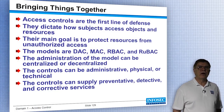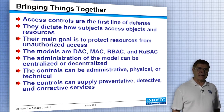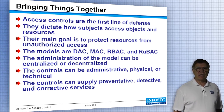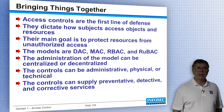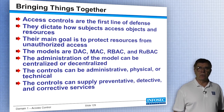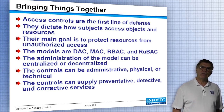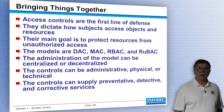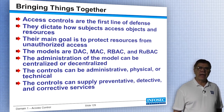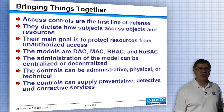That concludes this lecture on access control. We've talked about access control as the first line of defense — how subjects (people) access objects (data) and the resources involved. The main goal is to protect resources from unauthorized access. We covered the models: discretionary, mandatory, role-based, and rule-based access control; centralized, decentralized, and hybrid management; and administrative, physical, and technical controls — all of which can provide preventative, detective, and recovery services. Get ready for telecommunications — that's the next module.